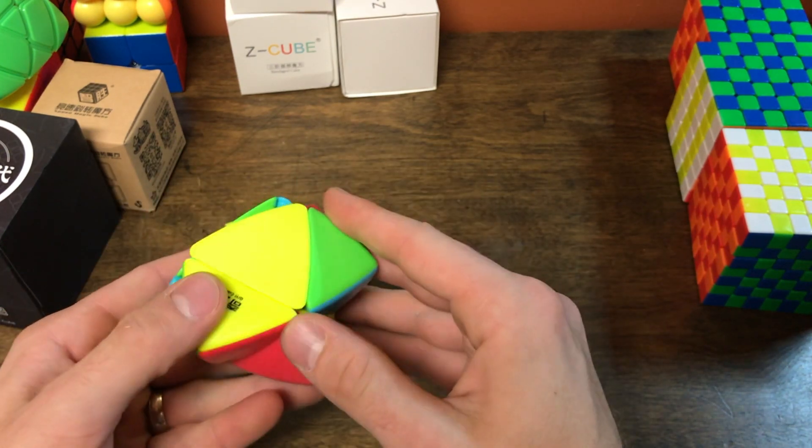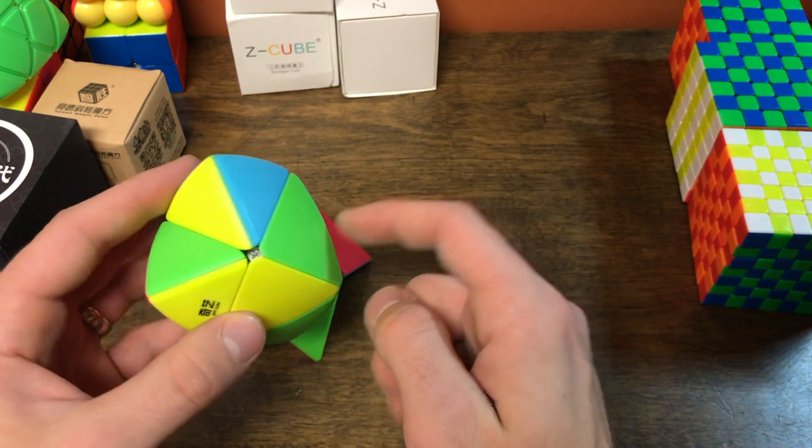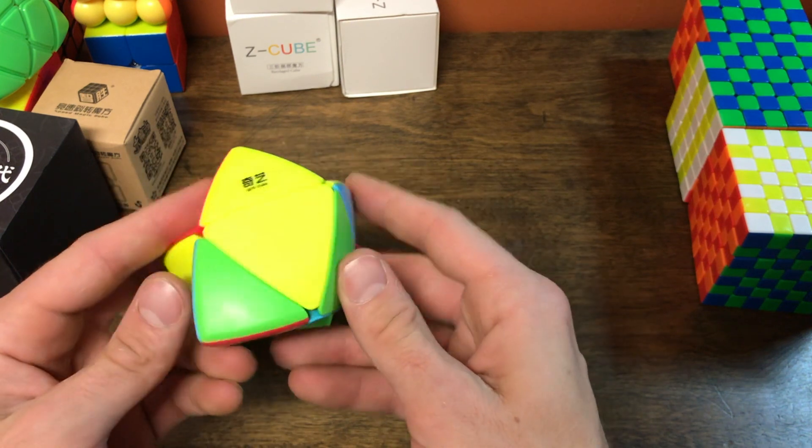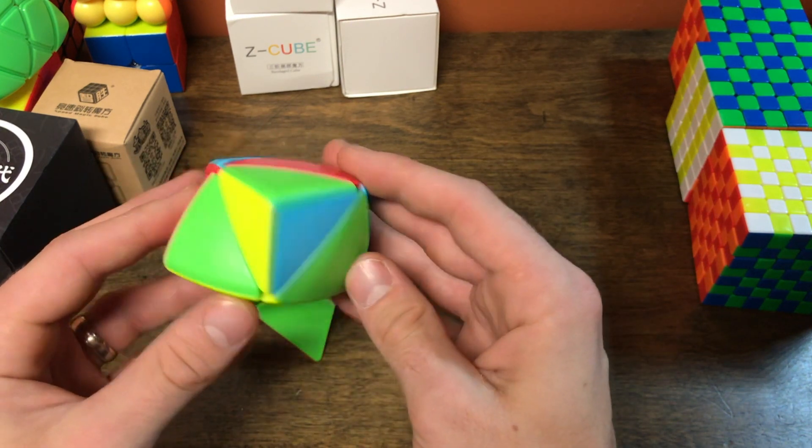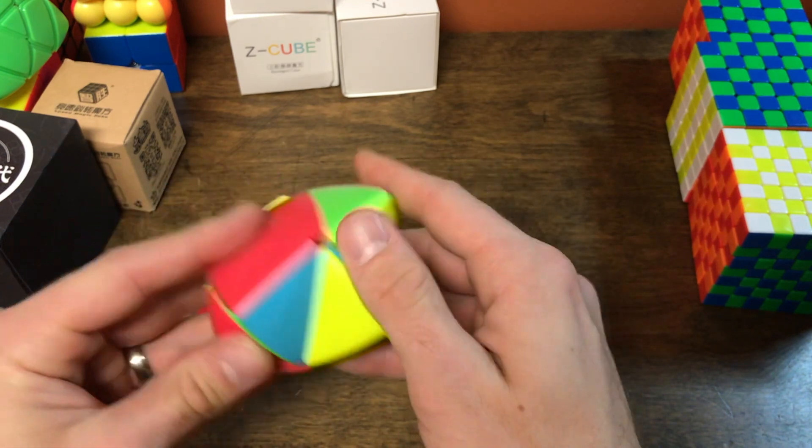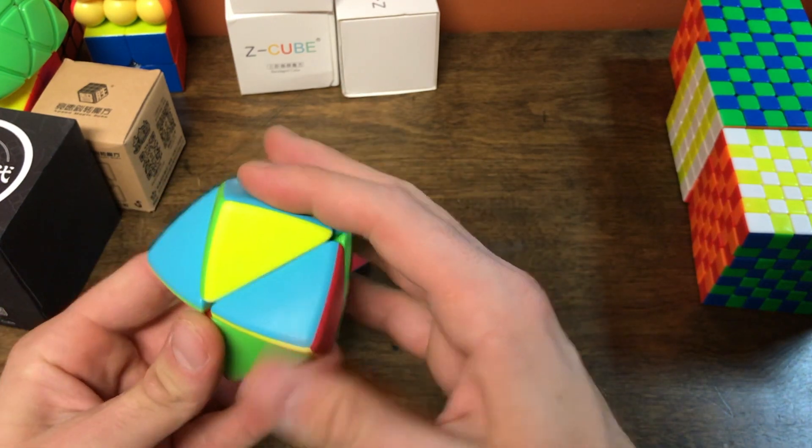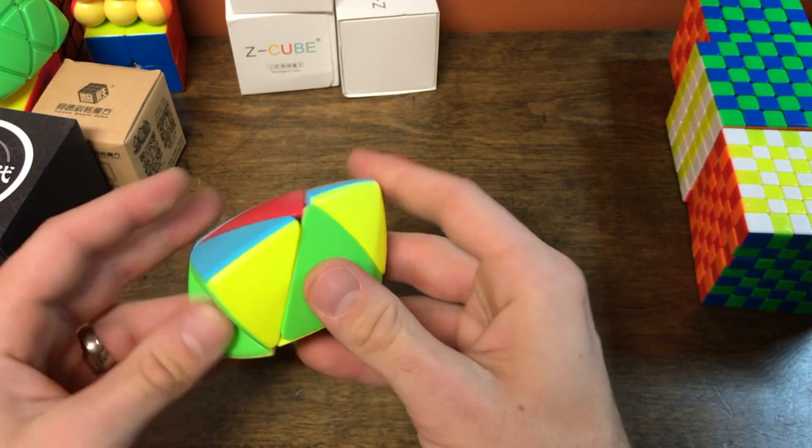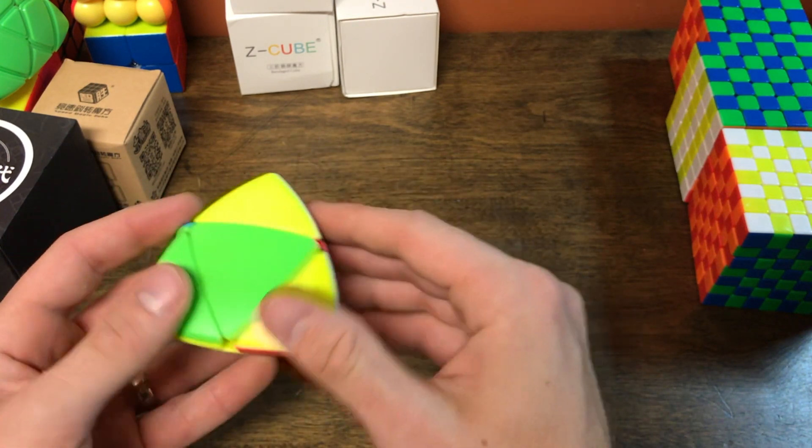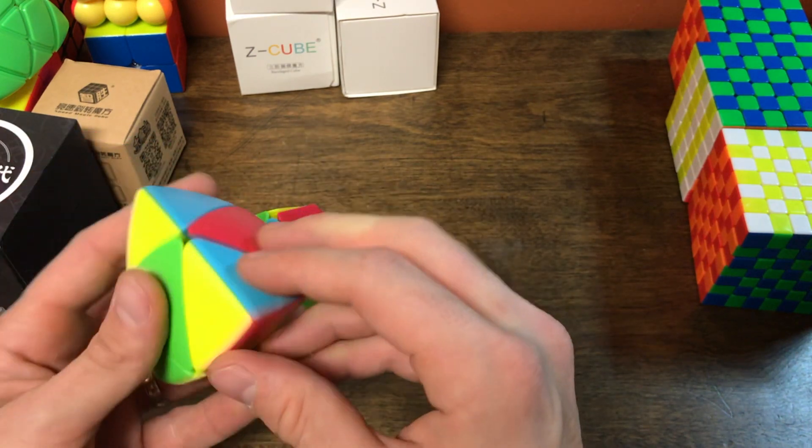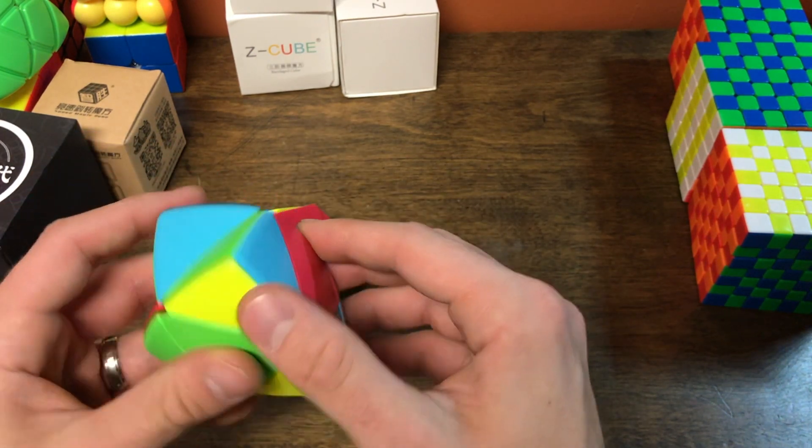So now that these are scrambled, like here, this needs to be... Actually, let's hold it like this. So we have... Nope, that actually needs to be that. Okay, there we go. This needs to be the green, yellow, blue corner, which... Here we go.